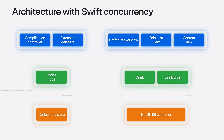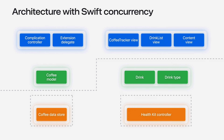By adopting Swift concurrency, we went from this ad hoc concurrency architecture to something that looked like this. The UI views and models were set to run on what's called the main actor, while background operations were performed on dedicated actors. The actors communicated between each other using thread-safe value types using Swift's async/await feature. When we were done, the concurrency architecture was as clear and easy to describe as the type architecture.